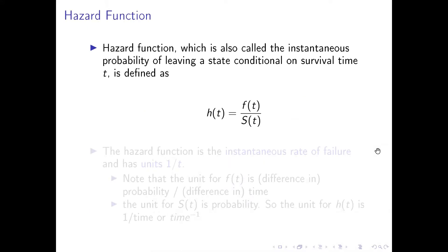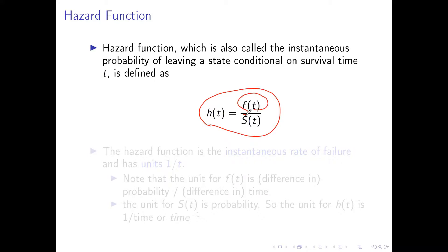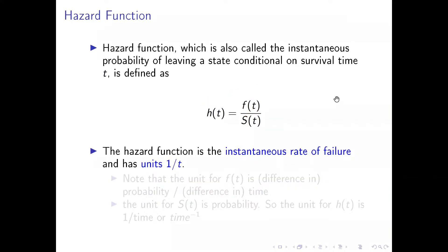In more substantive terms, the hazard function is called the instantaneous probability of leaving a state conditional on survival to time T. It follows the form of a ratio of the probability density function of time T and the survival function uppercase S of T. The hazard function can be understood as an instantaneous rate of failure, and has units of one over T — that is, one over time.